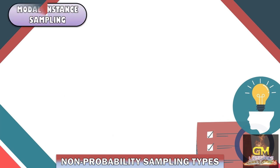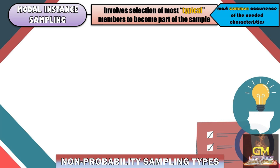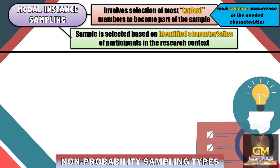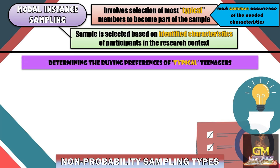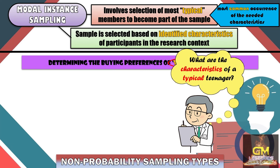Now let's talk about modal instance sampling. Modal instance sampling involves the selection of the most typical members to become part of the sample. When we say 'typical,' this refers to the most common occurrence of the needed characteristics. In modal instance sampling, the sample is selected based on identified characteristics of participants in the research context. For example, in a study that aims to determine the buying preferences of the typical teenager, the participants would be the typical teenagers. However, that leaves us with the question: what are the characteristics of a typical teenager?